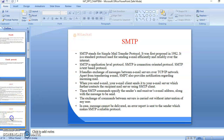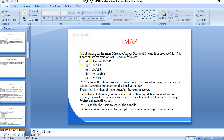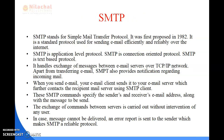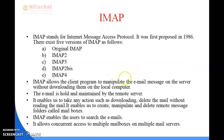Next is IMAP. IMAP stands for Internet Message Access Protocol. It was first proposed in 1986. There exist five versions of IMAP: the original IMAP, IMAP2, IMAP3, IMAP2bis, and the latest, IMAP4.